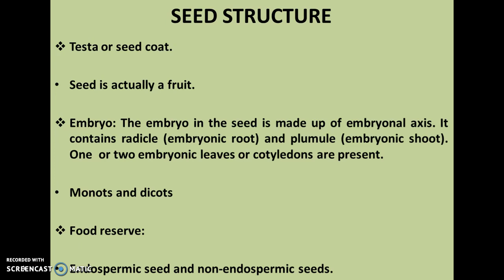The embryo is the future plant in a miniature condition. The embryo in the seed is made up of an embryonic axis, which contains the radicle or embryonic root, and the plumule or embryonic shoot. It may also contain one or two embryonic leaves, or cotyledons. In monocotyledons there is just one cotyledon, whereas in dicotyledons there are two. Based on the number of cotyledons, plants are classified into monocots and dicots.